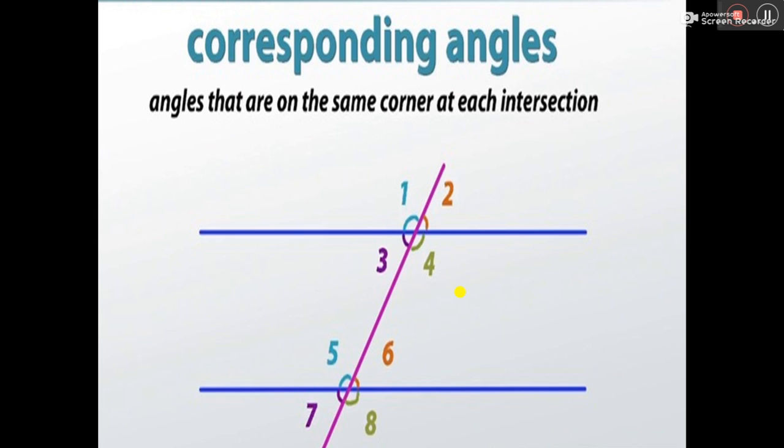Now, corresponding angles are angles that form at the same corner at each intersection. So now, the corresponding angles here—you can see they have the same color of numbers. For example, I have one. One has the same color with five. So angle 1 is corresponding to angle 5. They are at the same corner of intersection. At this point, point A of intersection, this is an angle here.